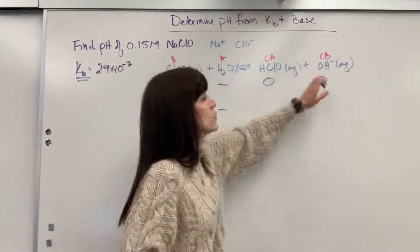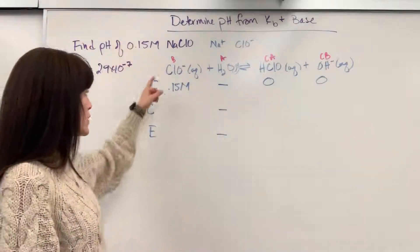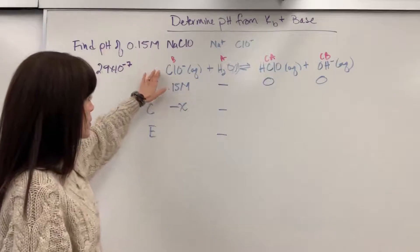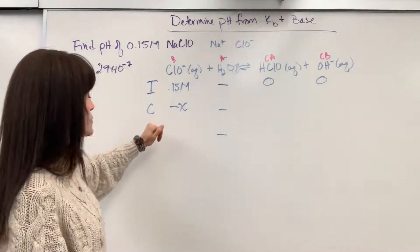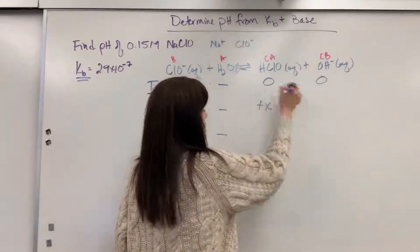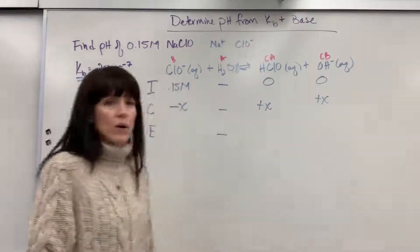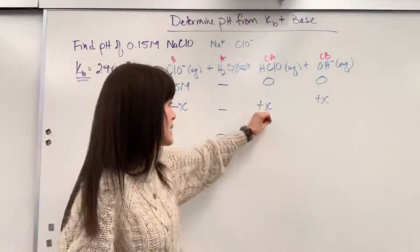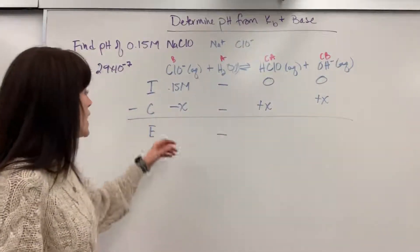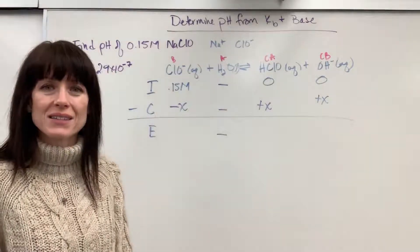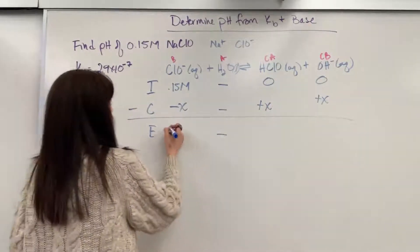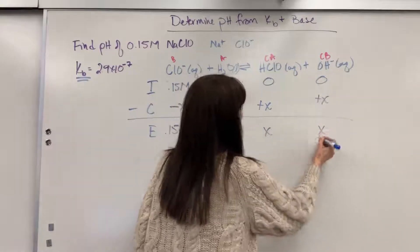Now the change. Notice these are all 1, 1, 1, 1 molar coefficients. So I use those same coefficients in the change. We're going to lose an amount of the hypochlorite, and that's 1 mole. So I just leave it as X, understood to be 1X. And for every 1 mole that I lose here, we will gain 1 mole of the hypochlorous acid and 1 mole of that OH. Equilibrium is super easy. I minus C, we're going to get 0.15 minus X, 0 plus X is X, 0 plus X is X.